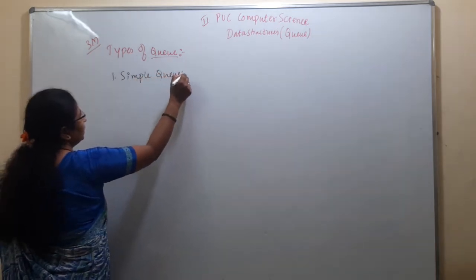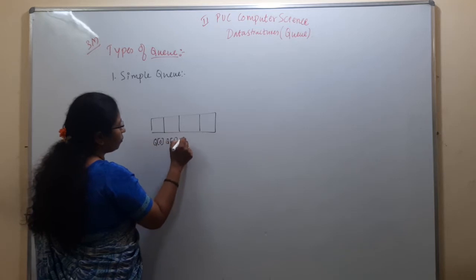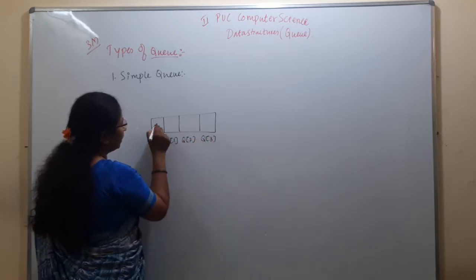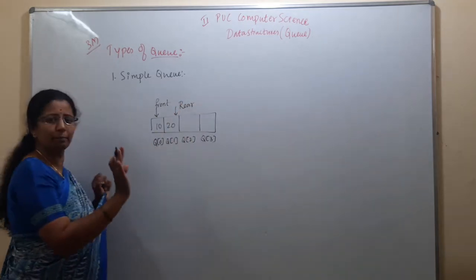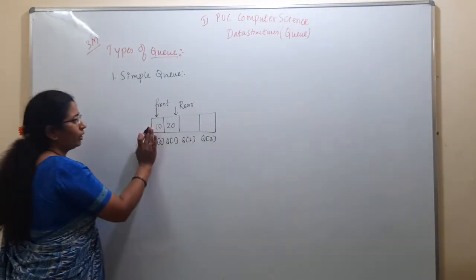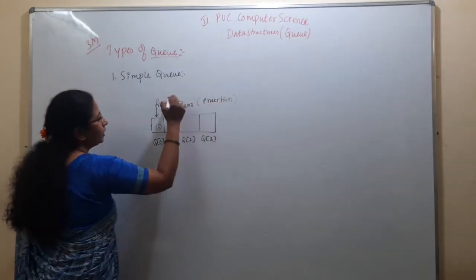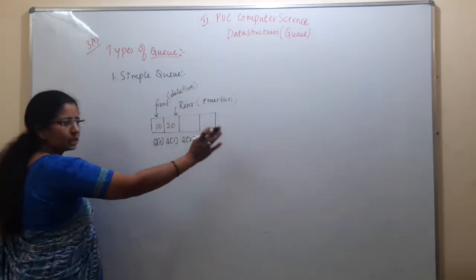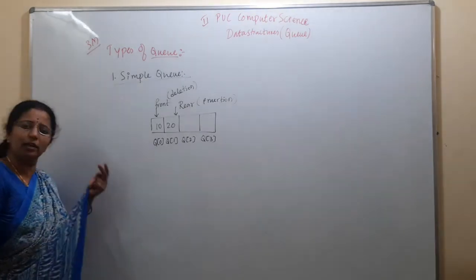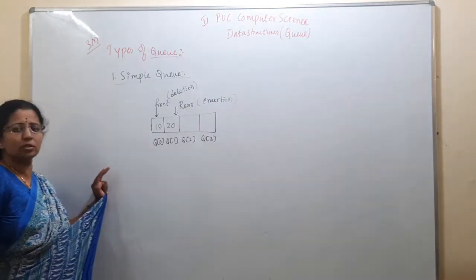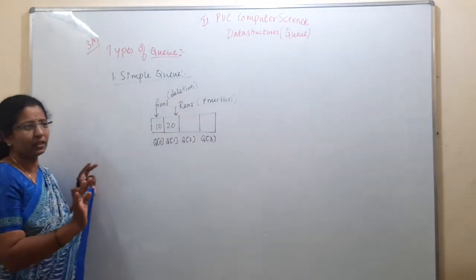Simple queue: there is one queue structure with elements at positions Q of 0, Q of 1, Q of 2, Q of 3, with a front pointer and a rear pointer. This is called a simple queue data structure — insertion at the rear pointer end and deletion at the front pointer end, implemented using either array or linked list.